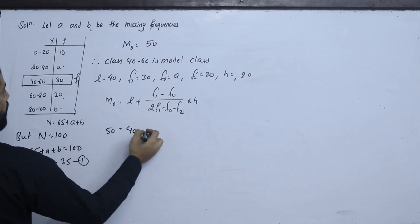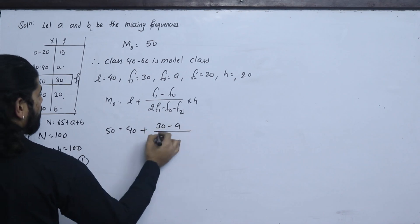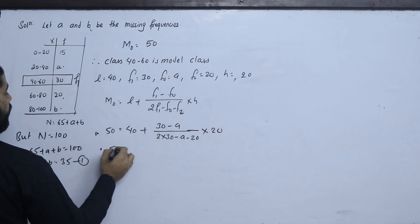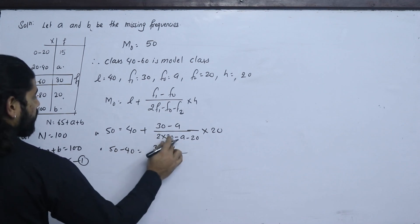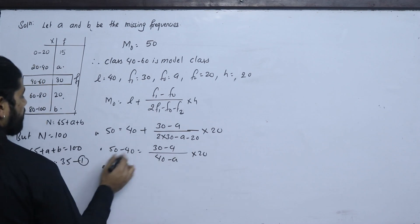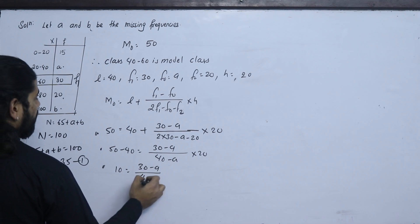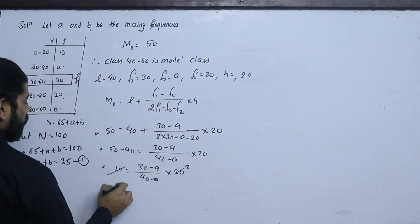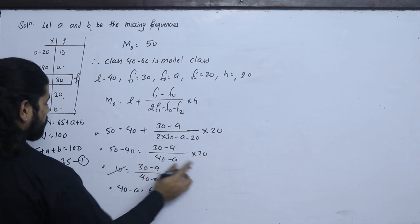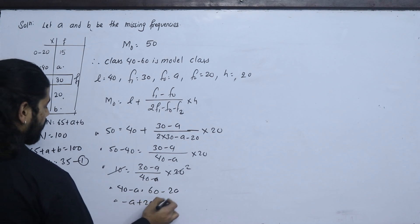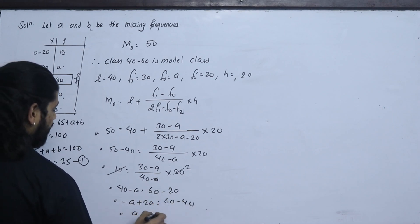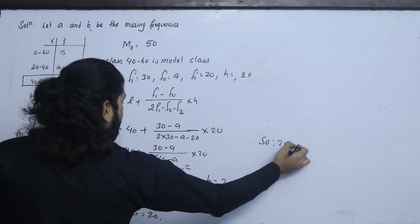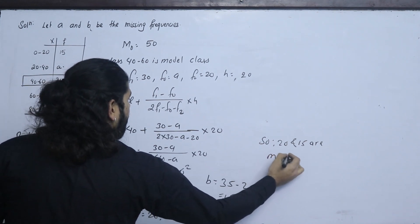Applying the mode formula: 50 equals 40 plus 30 minus A upon 2 into 30 minus A minus 20, into 20. This gives 10 equals 30 minus A upon 40 minus A, into 20. Solving: 40 minus A equals 60 minus 2A, so A equals 20. Since A plus B equals 35, B equals 15. So the missing frequencies are A equal to 20 and B equal to 15.